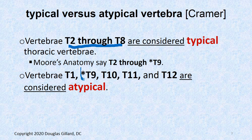T9 is kind of a weird one because Moore's Anatomy — a board book — adds T9 as atypical, but Kramer does not include T9. I always check all the board books. I'll probably just stay away from that question.